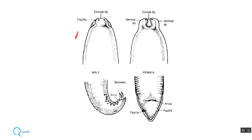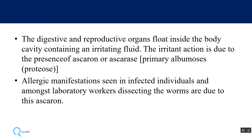Looking at the diagram: this is the anterior end and this is the posterior end. You can see there is one dorsal lip and two ventral lips, which are more clearly shown in this diagram — so there are three lips at the anterior end. The digestive and reproductive organs float inside the body cavity.